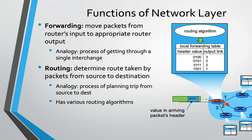Forwarding and routing might sound the same, but they are different. For example, a router receives a packet on port zero, and the destination address is, say, 01111. The router consults a table — known as the forwarding table or routing table — which lists various networks and which port to use to reach them. So when a packet arrives, the router does a lookup in the routing table and forwards it out the correct port. That lookup and transfer is the forwarding part.